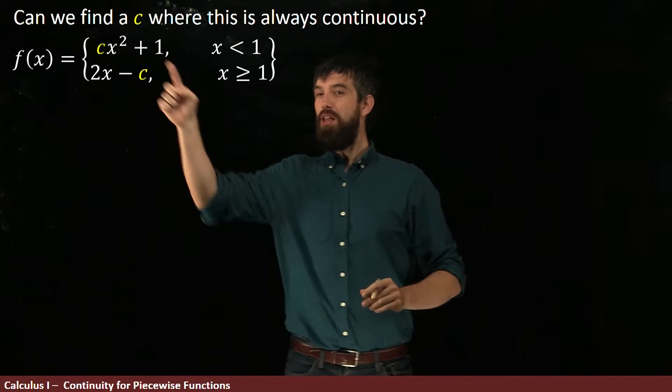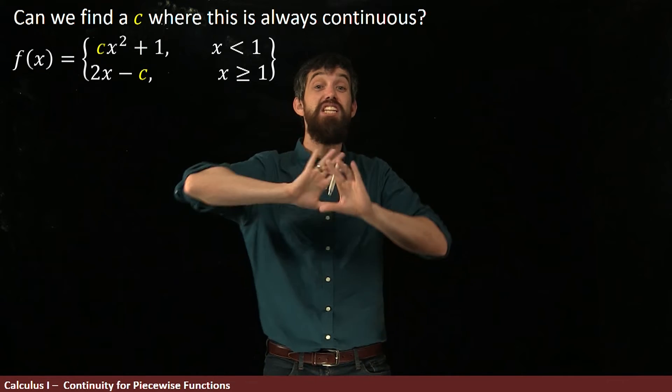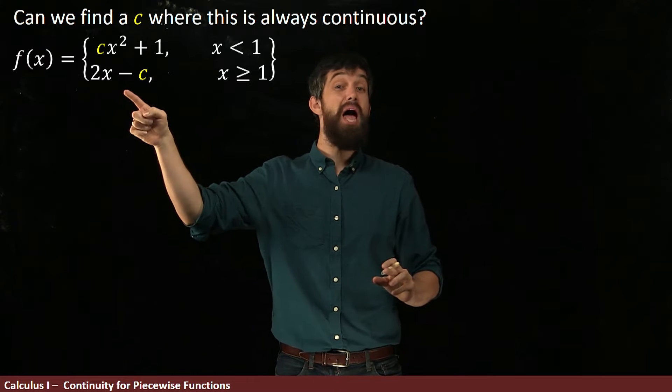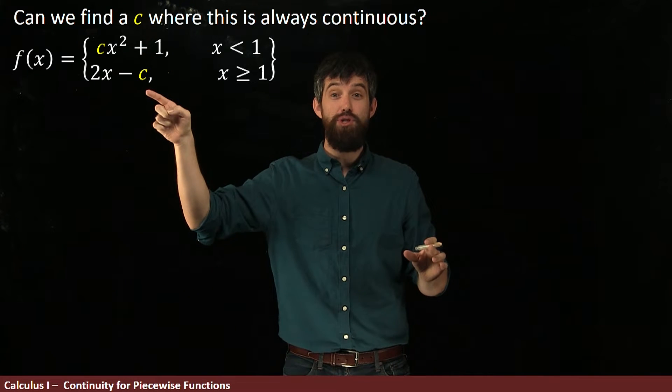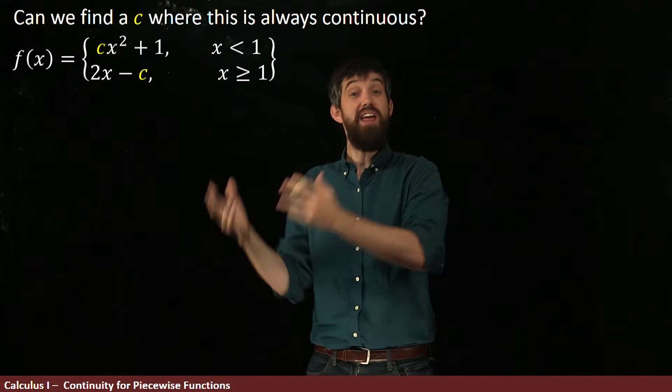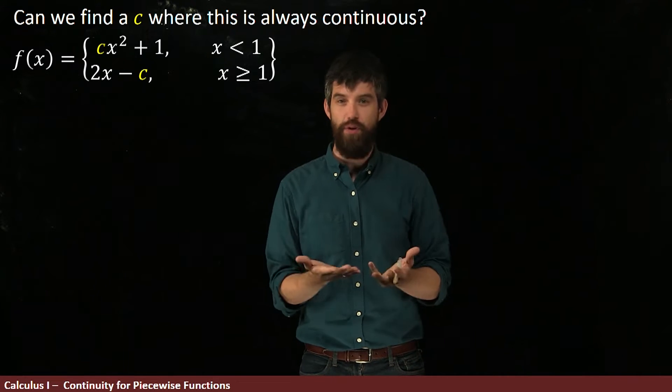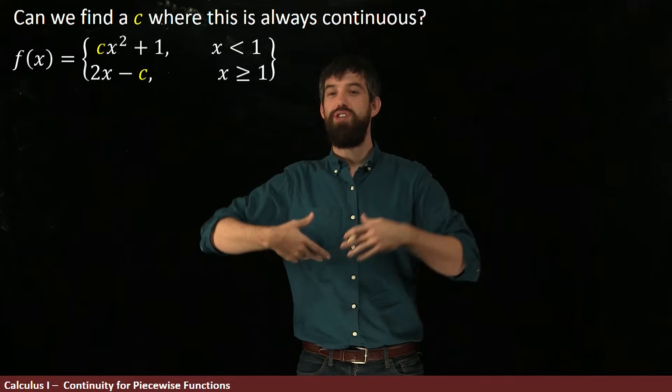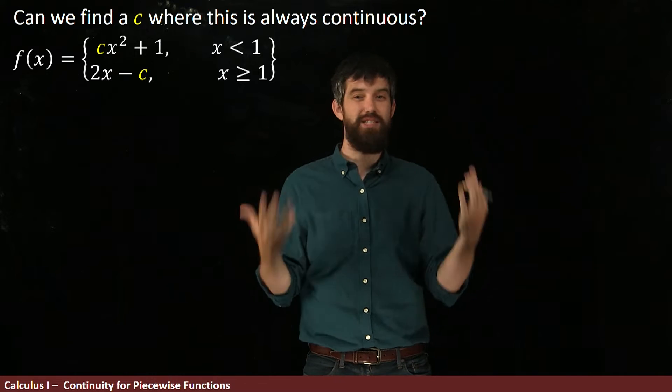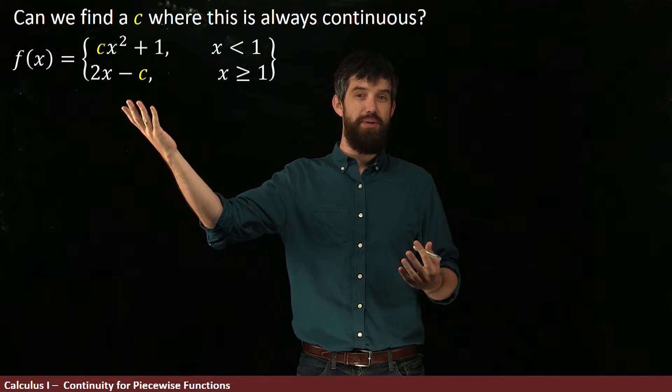First, I want to note this. If I look at this function or this function individually, like if this applied for all values of x, either of those are just polynomials. One's a quadratic, one's a linear. And polynomials are continuous absolutely everywhere. There's no division by zero, there's no infinite spikes, there's no oscillatory behavior. These are continuous everywhere.